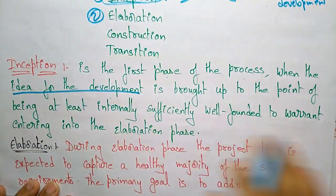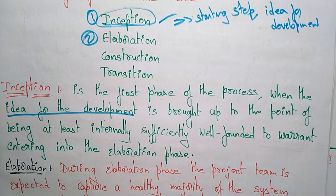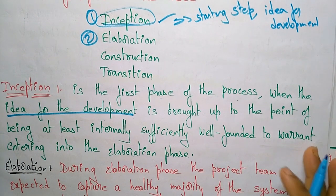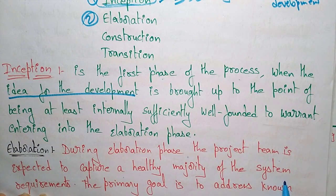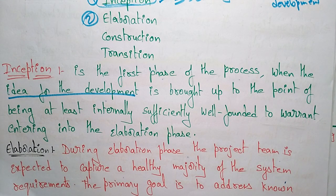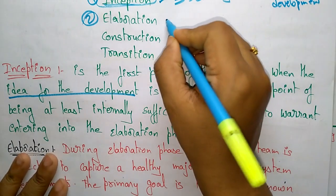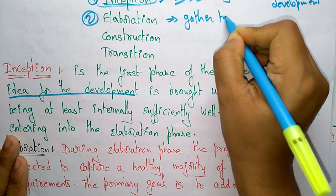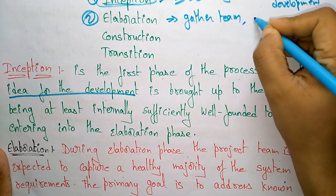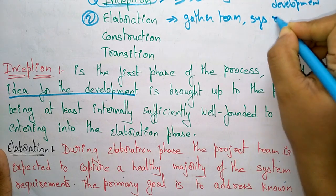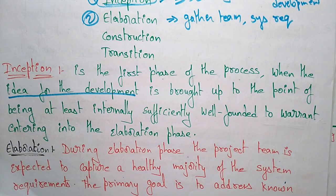Next is Elaboration, the second phase in the software development cycle. In the Elaboration phase, the project team is expected to capture a healthy majority of the system requirements. So you gather the team and gather the system requirements during this phase.